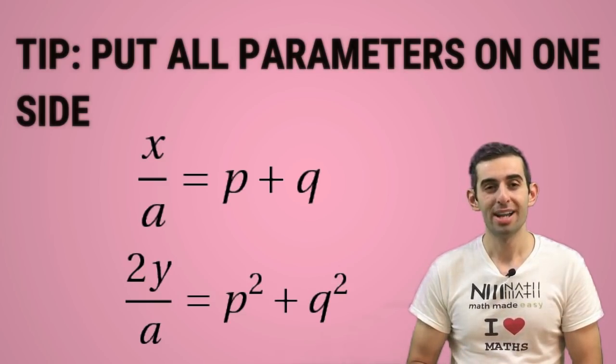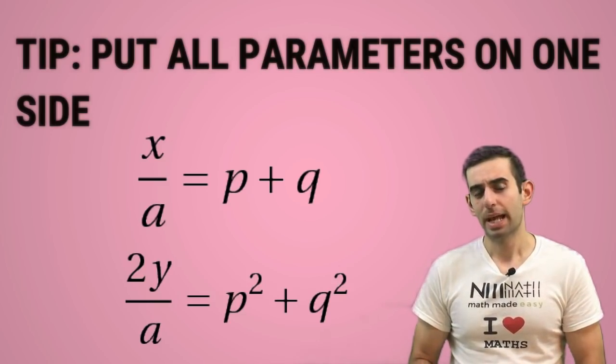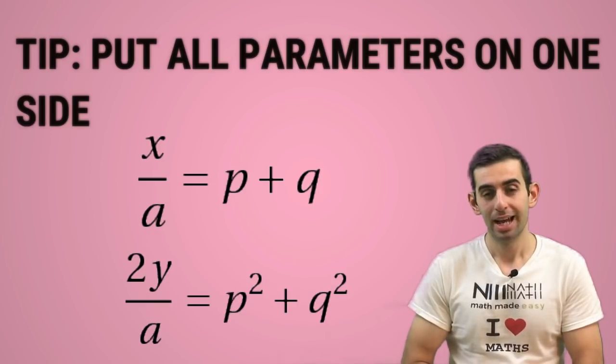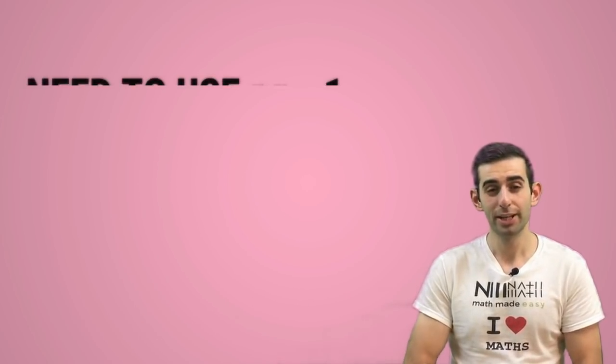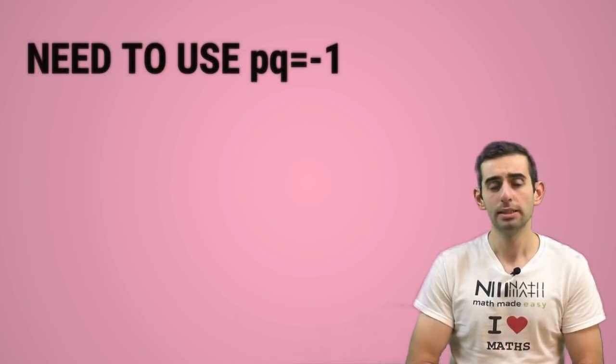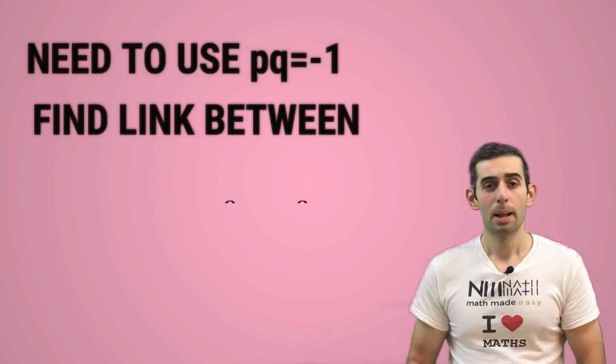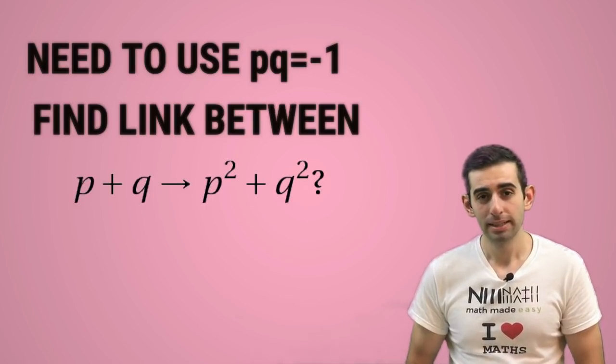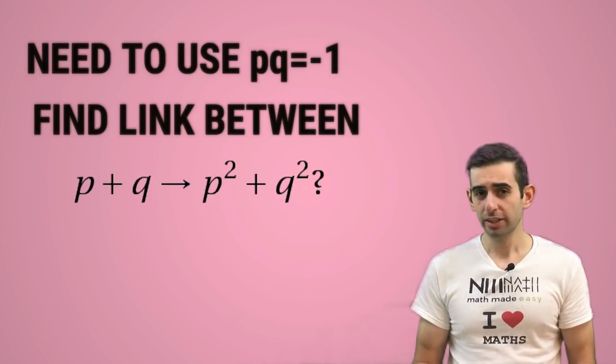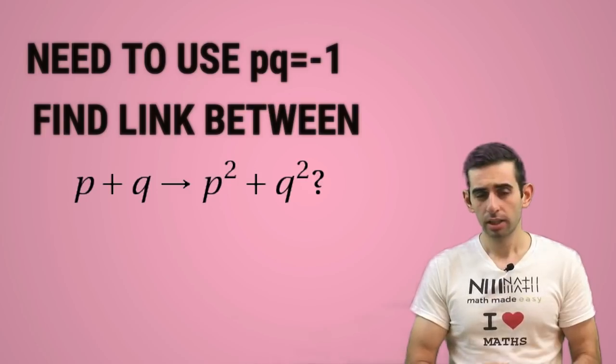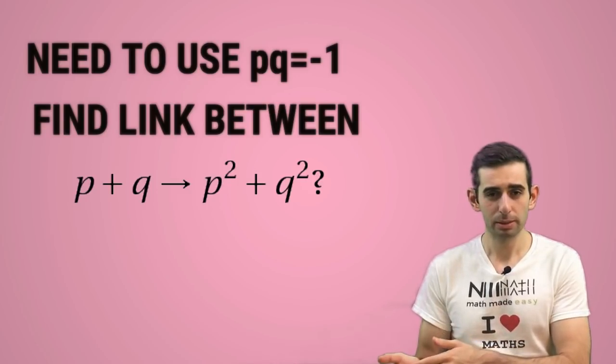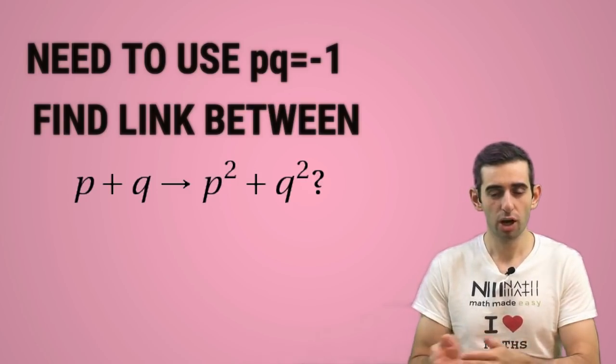We need to eliminate p and q, and our special condition in the question was pq = -1. Now in order to eliminate that, we need to find a link between p+q and p²+q². So you have to think to yourself: what operation can turn p+q into p²+q²? You always want to go from the smaller to the higher power. Going from higher powers to lower powers is usually harder.